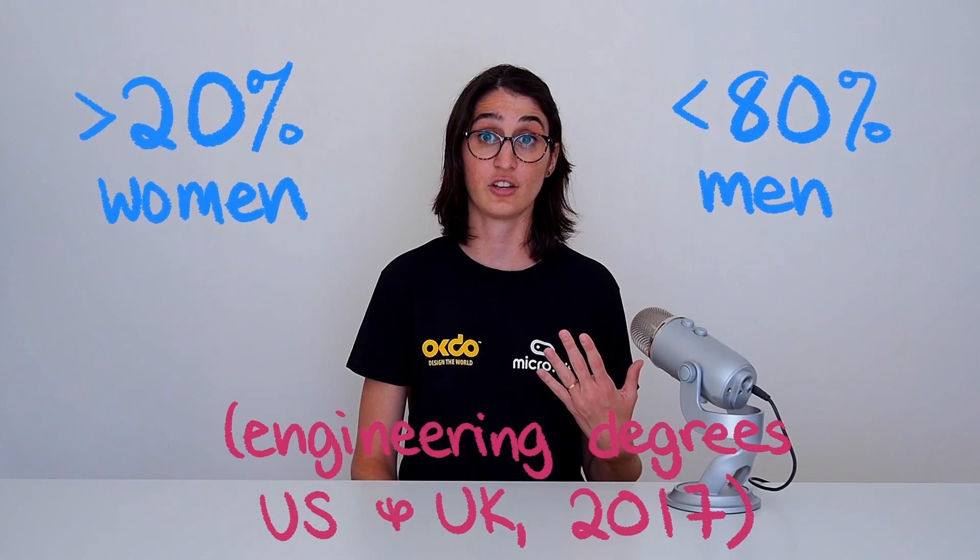For example, if the theme this year is quality education, I would think about challenges in that theme that I care about. In my case, that's engineering education. One of the problems I'm interested in tackling is the fact that there are fewer girls who study engineering than boys. So for me, I would define that as my problem.